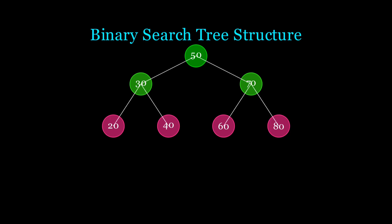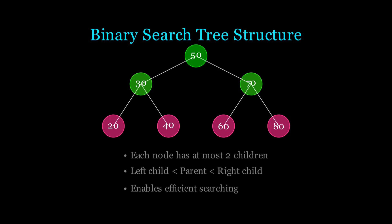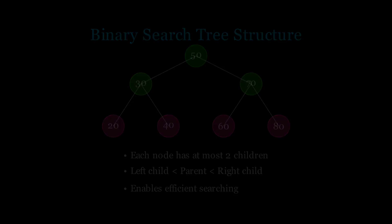We know the structure of a BST. Each node has at most two children, and the left child is less than the parent, which is less than the right child. This enables efficient searching operations.